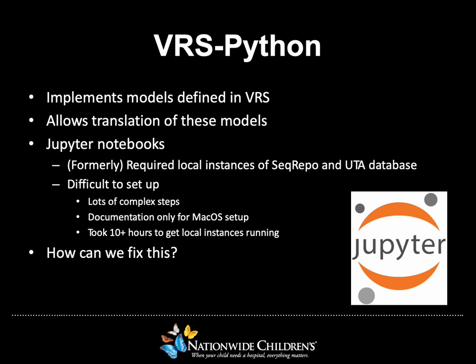Formerly, to set up and use VRS Python notebooks, users would have to have local running instances of SeqRepo and the UTA database, and setup was a laborious task. These steps for setup were technologically complex, documentation was only produced for macOS, and the time to set up SeqRepo and UTA would take 10 or more hours in a best-case scenario, assuming no errors were run into during the installation or setup process. This provided a sizable barrier for any interested parties of VRS to get involved and start to use it.